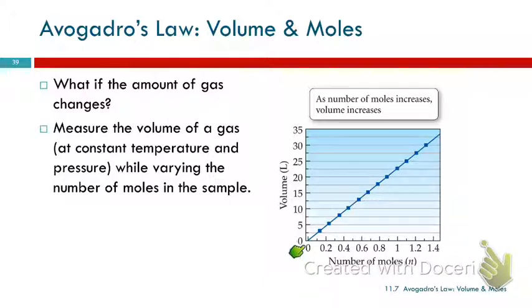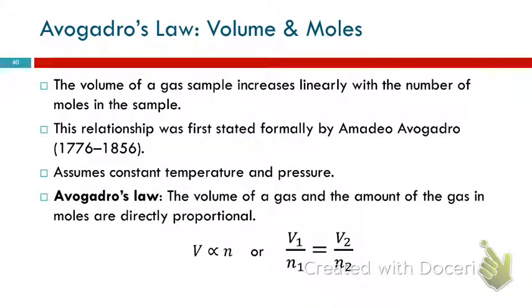So at zero gas present, then the volume would be zero, if that makes sense. As you add more gas, the volume increases, and it's a linear relationship. So the volume of the gas increases linearly with the number of moles of gas in the sample. And this was first observed by Amadeo Avogadro of Avogadro's number. He was born the same year our country was born in 1776.